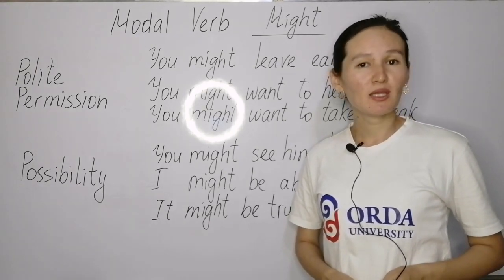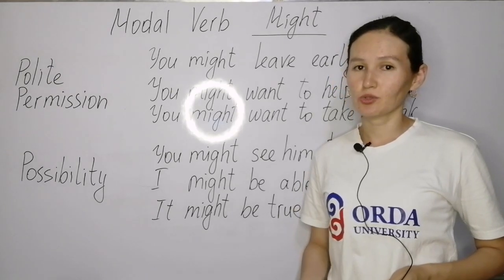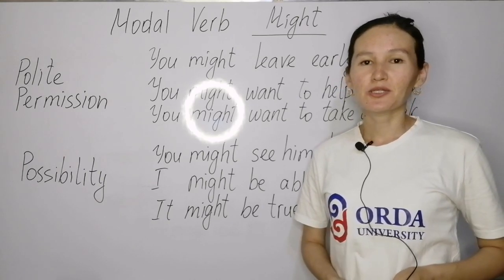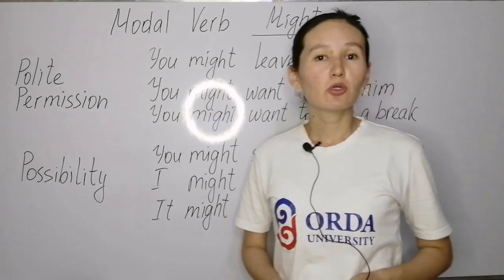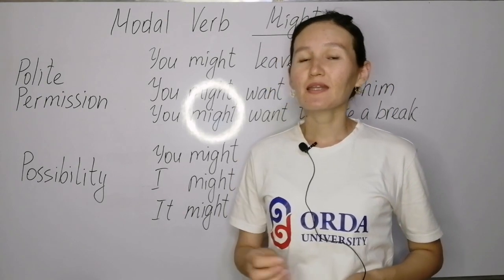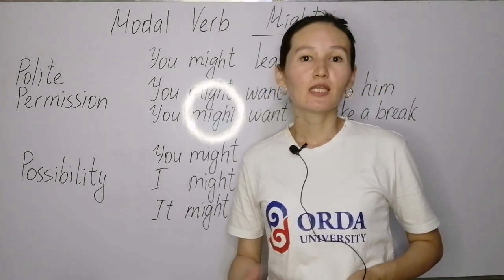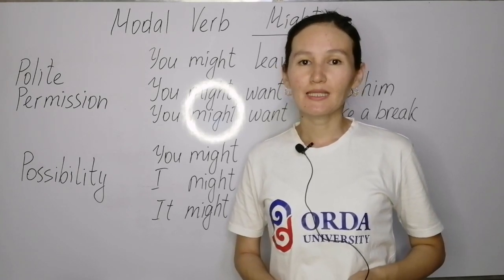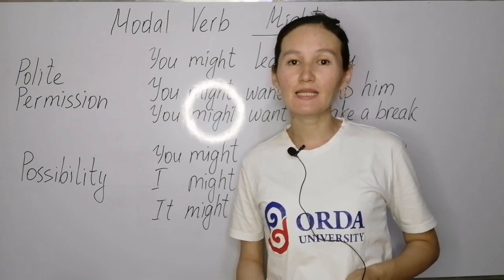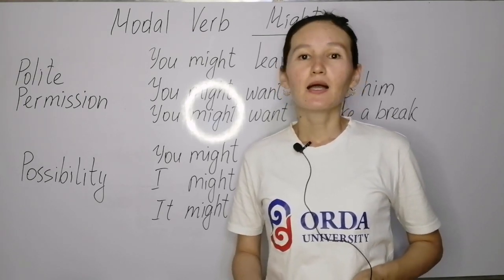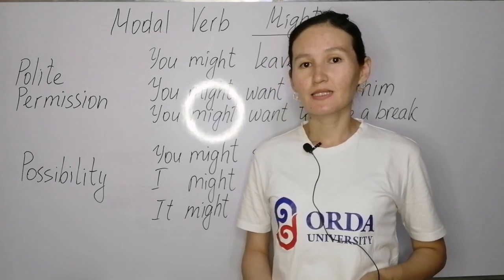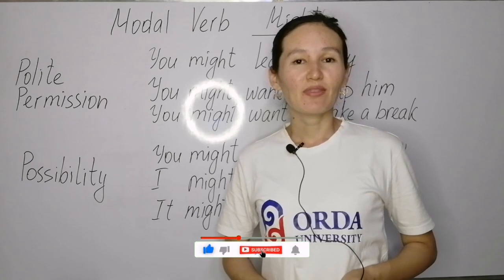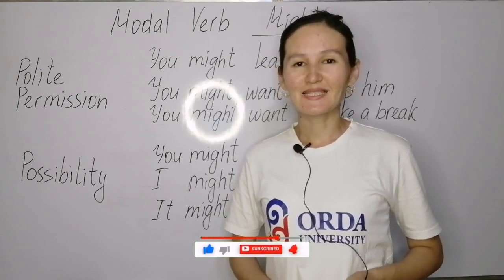More possibility examples: 'It might be true,' 'it might be interesting,' 'it might be hard,' 'it might be dangerous.' To wrap it up, modal verbs are used with other verbs to describe or express ideas — mostly to talk about ability, possibility, to make offers, to make requests, polite permission, and so on. That's it for today, see you in the next lesson, bye bye.